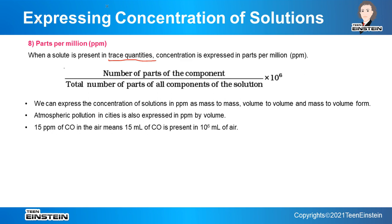PPM is used only when there is a very low amount of solute. It is expressed as the number of parts of a component divided by the total number of parts of all components of the solution. You also have to multiply by 10 to the power 6, because this ratio will be very small since the denominator is very high compared to the numerator.